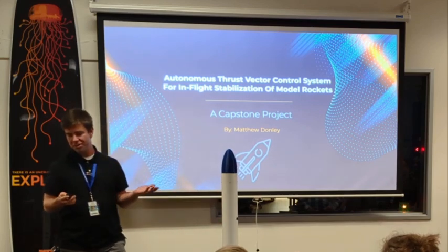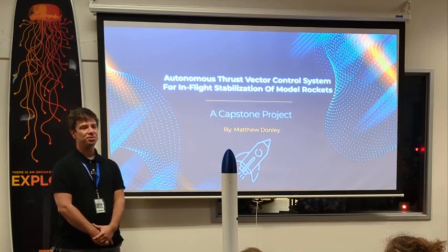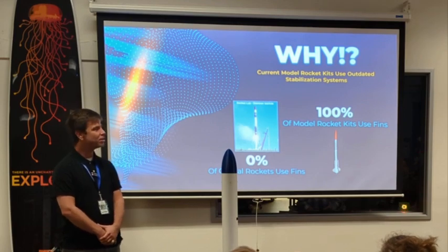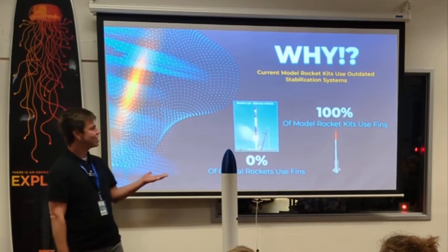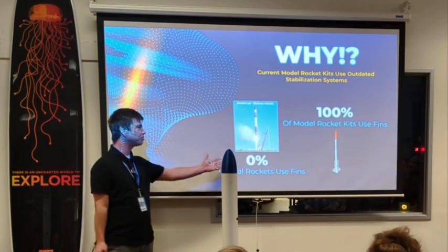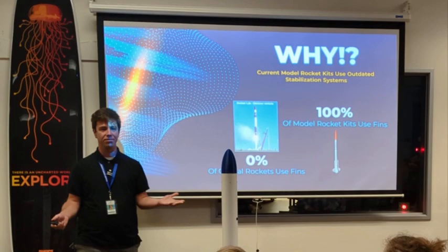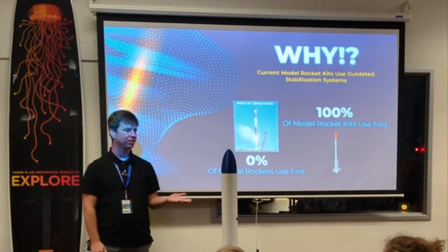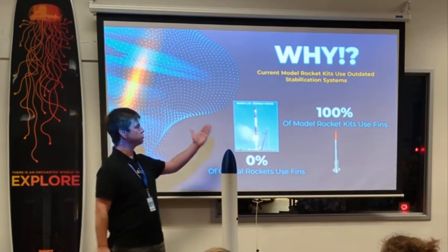What problem does that solve exactly? Well, model rockets are supposed to model rockets, and right now if you go shopping for a model rocket, every one of the kits you find online uses passive stabilization, which is what fins are. That's not what happens at all in true rockets — they use thrust vector control along with other systems to stabilize themselves while in flight. This is a problem because if kids start learning about rockets through models, they're learning the wrong things and solving problems that aren't being solved in actual rocketry.